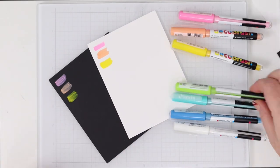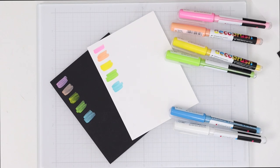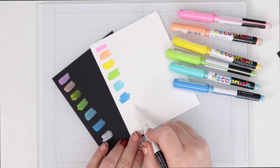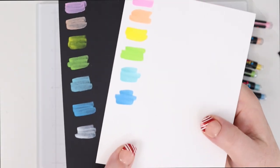So I got these colors from the deco brush pigment markers from Karen markers individually and I just wanted to swatch them out really fast for you to show you the difference between using them on black cardstock and white cardstock.